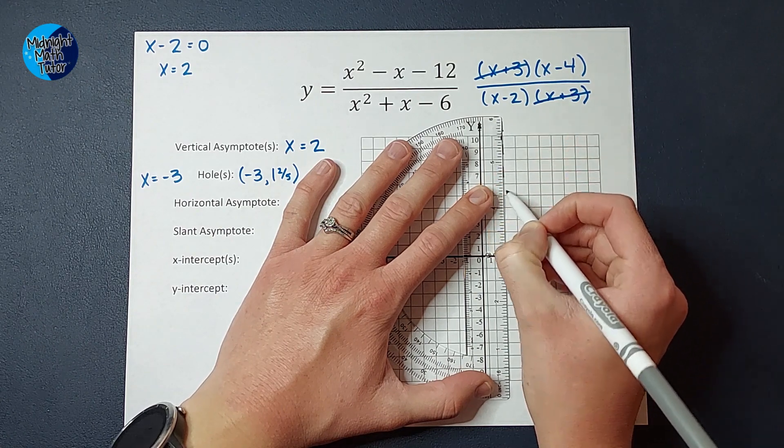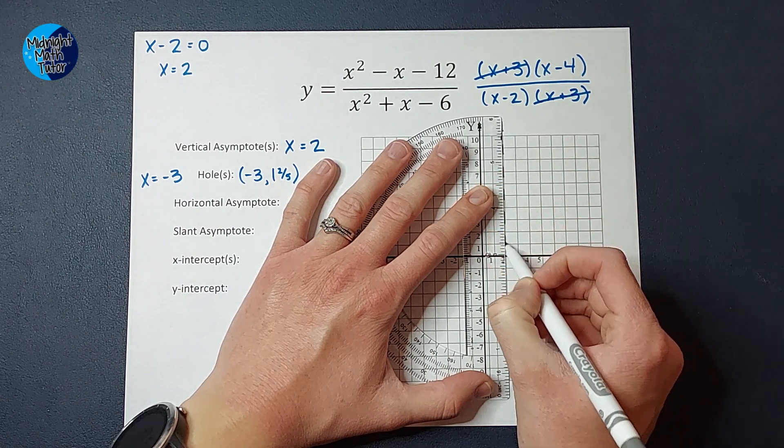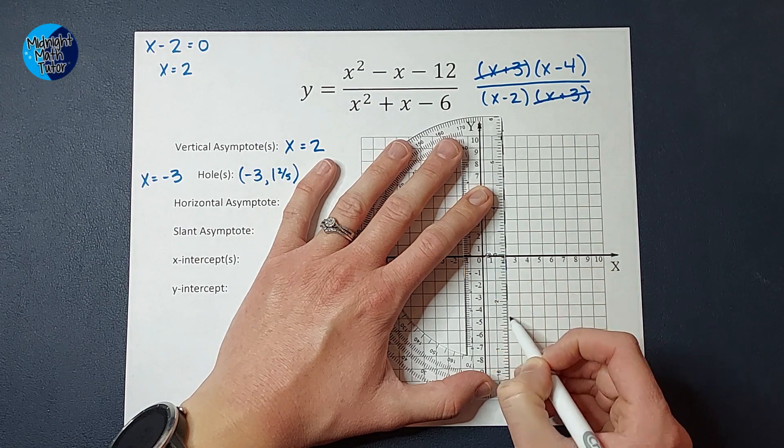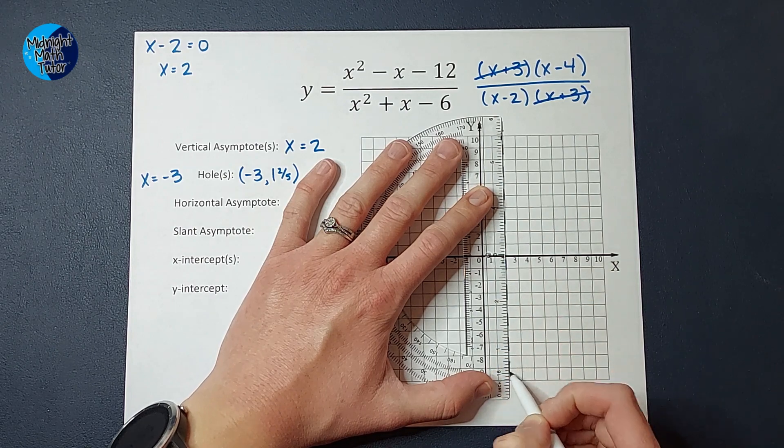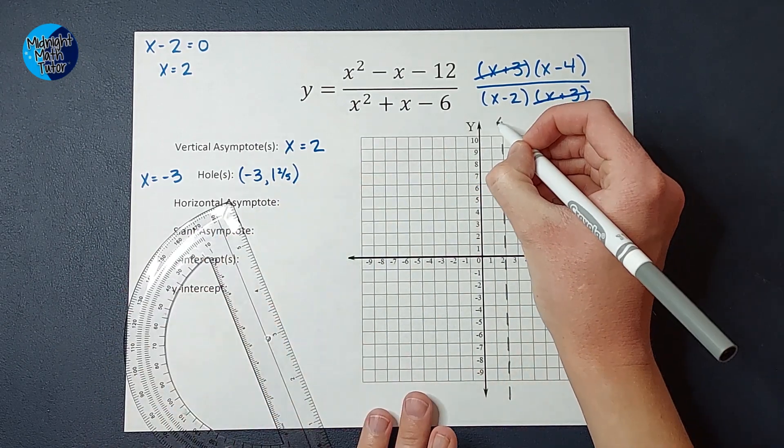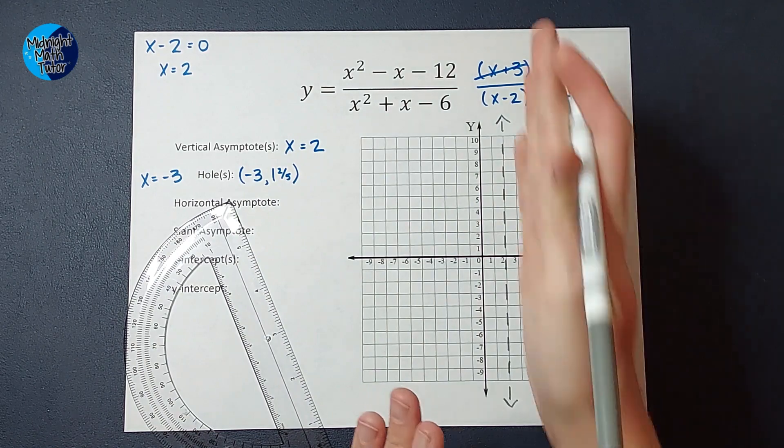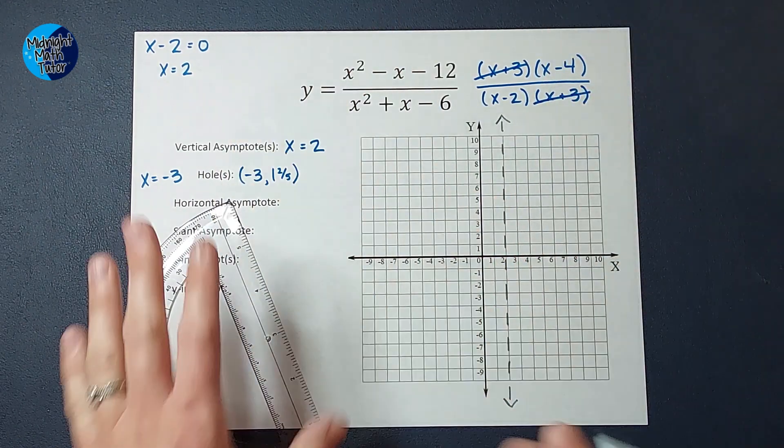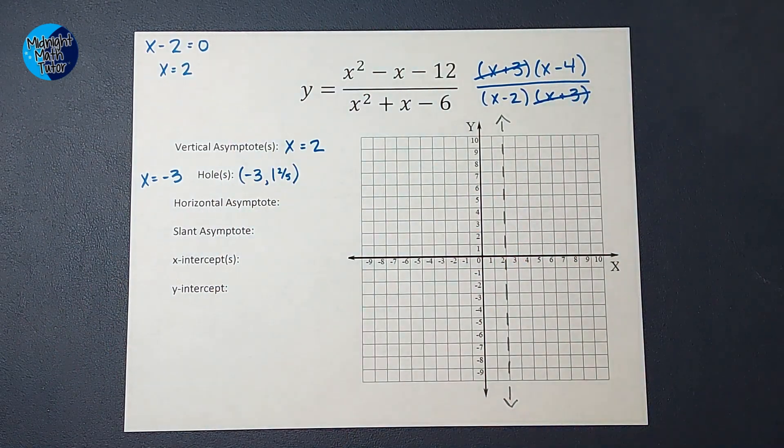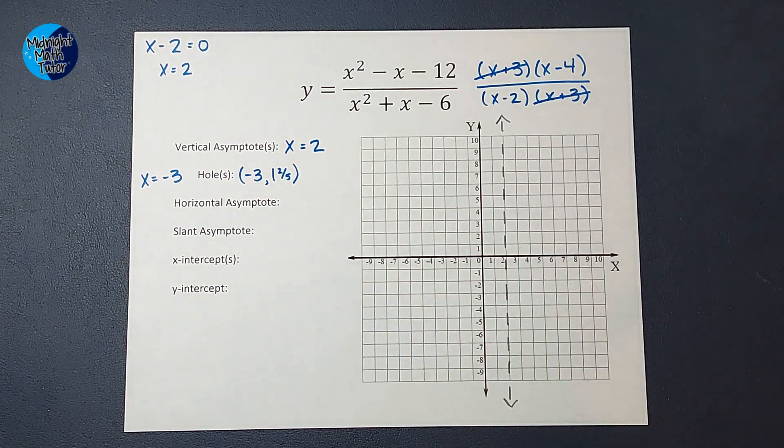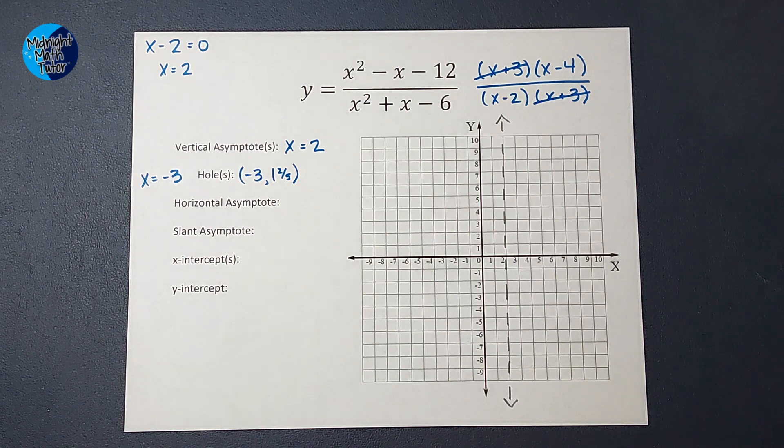Now, if you graph this on a graphing calculator, you may not actually see a dotted line. That's how we like to show it when we do it by hand. But on a graphing calculator or something, you'll just see a blank space where the graph approaches but doesn't touch. So my graph will not cross this line. If it does, go back and check some of your work. You probably have a miscalculation somewhere.